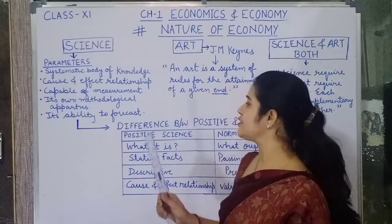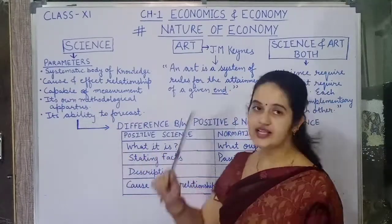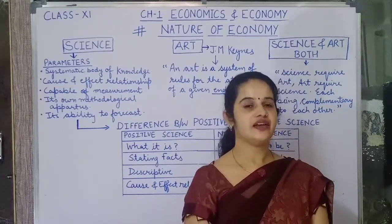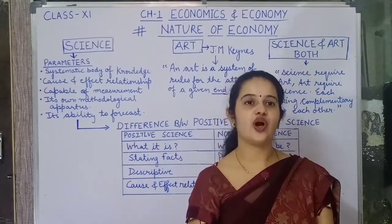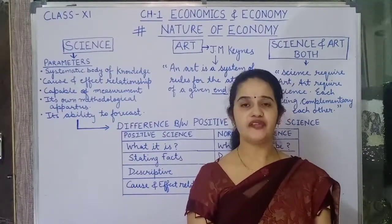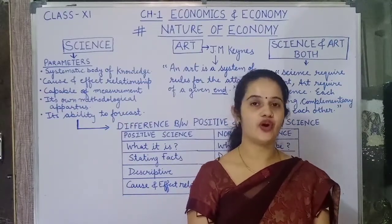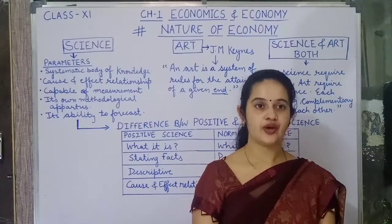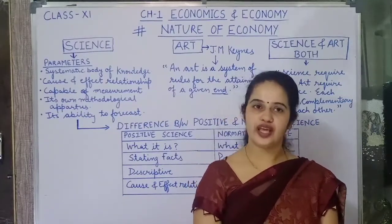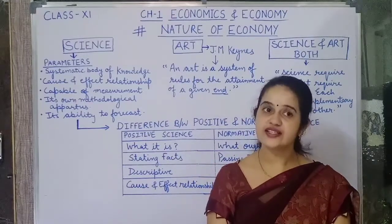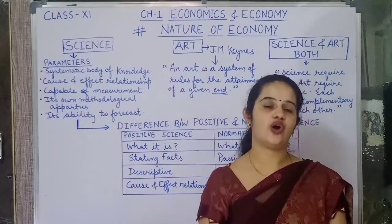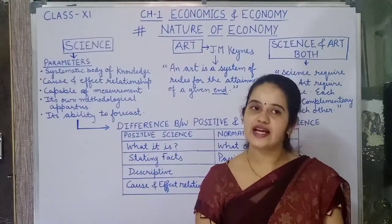The last parameter is the ability to forecast. Does economics have the ability to forecast? Yes — with the help of economics, we forecast things like what would be the unemployment rate next year, or what would be the GDP next year. So economics fulfills all five parameters, and hence economics can be called a science.